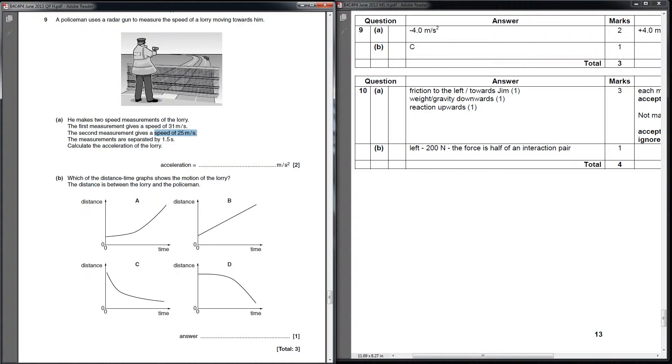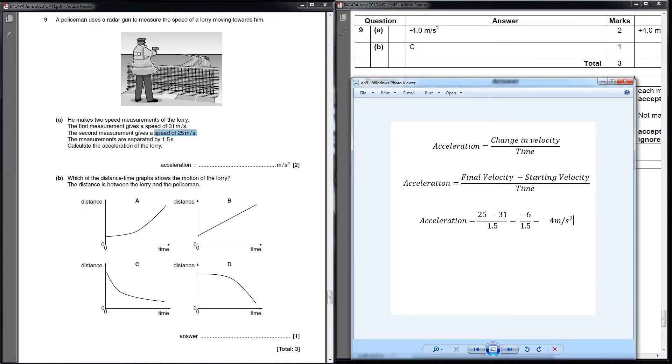Whenever you get a change in, that means something very specific. I'm going to pull up the working to this calculation here. This is how you should lay this out. There's not a lot of space they've left you here, but you can write it down the side of the picture. Acceleration is change in velocity divided by time. A change in something is the final value minus the starting value, and you must do it that way round.